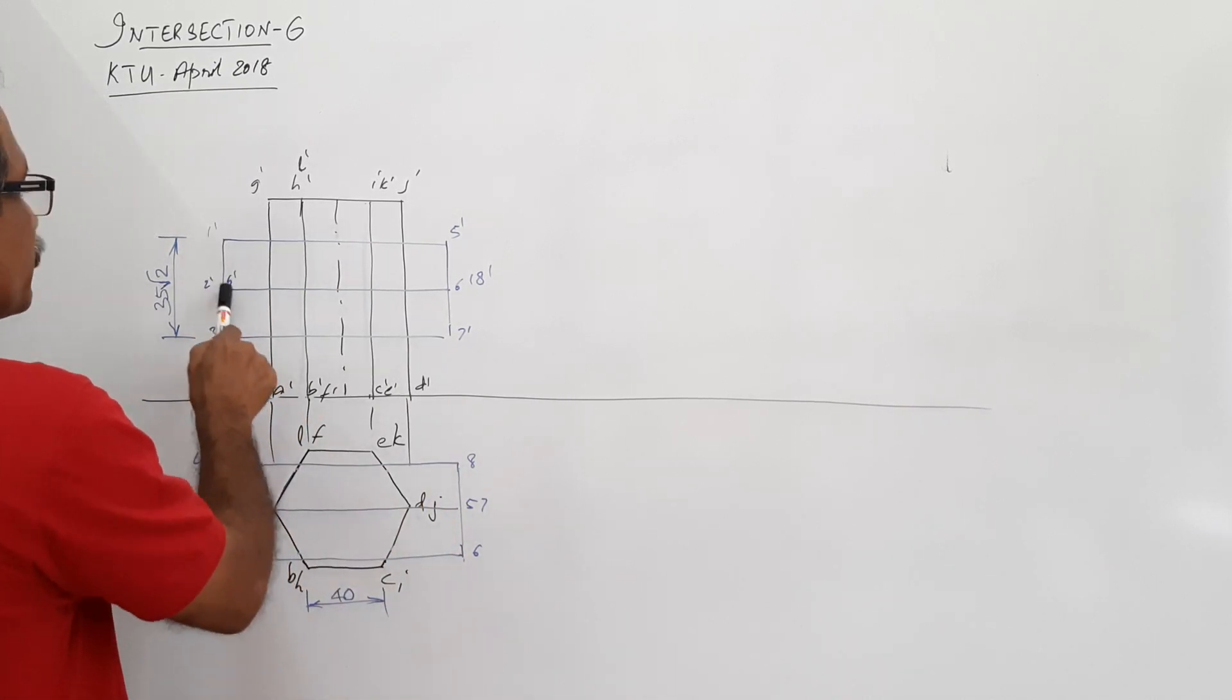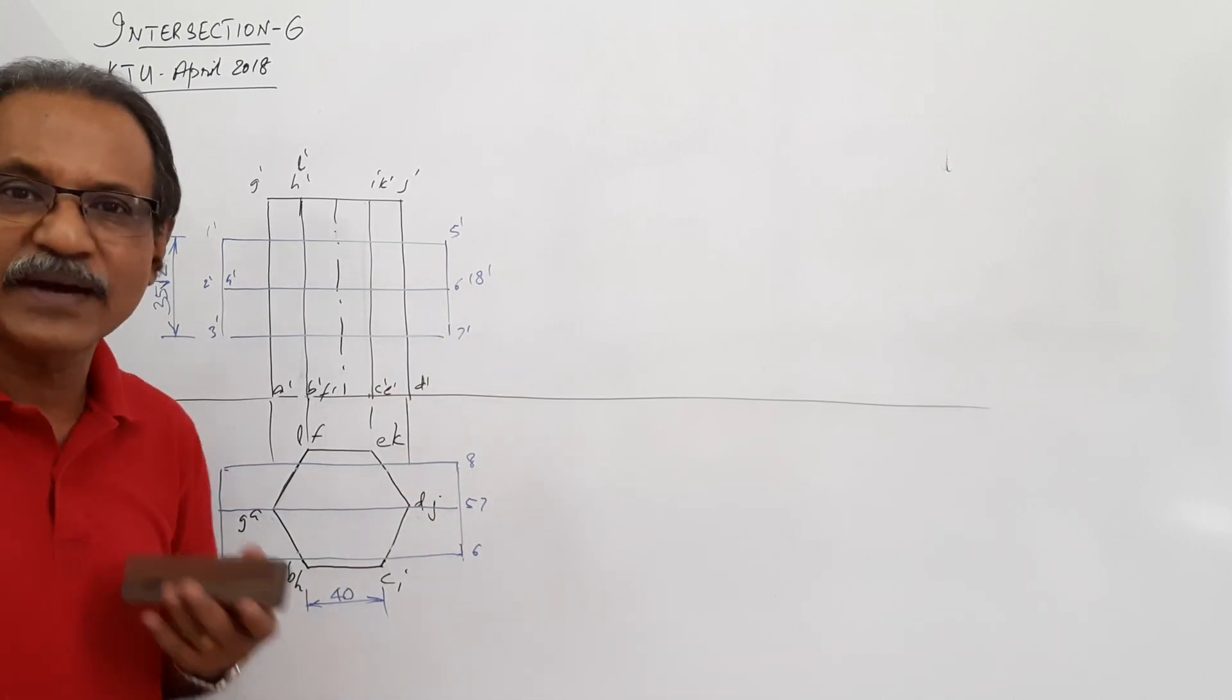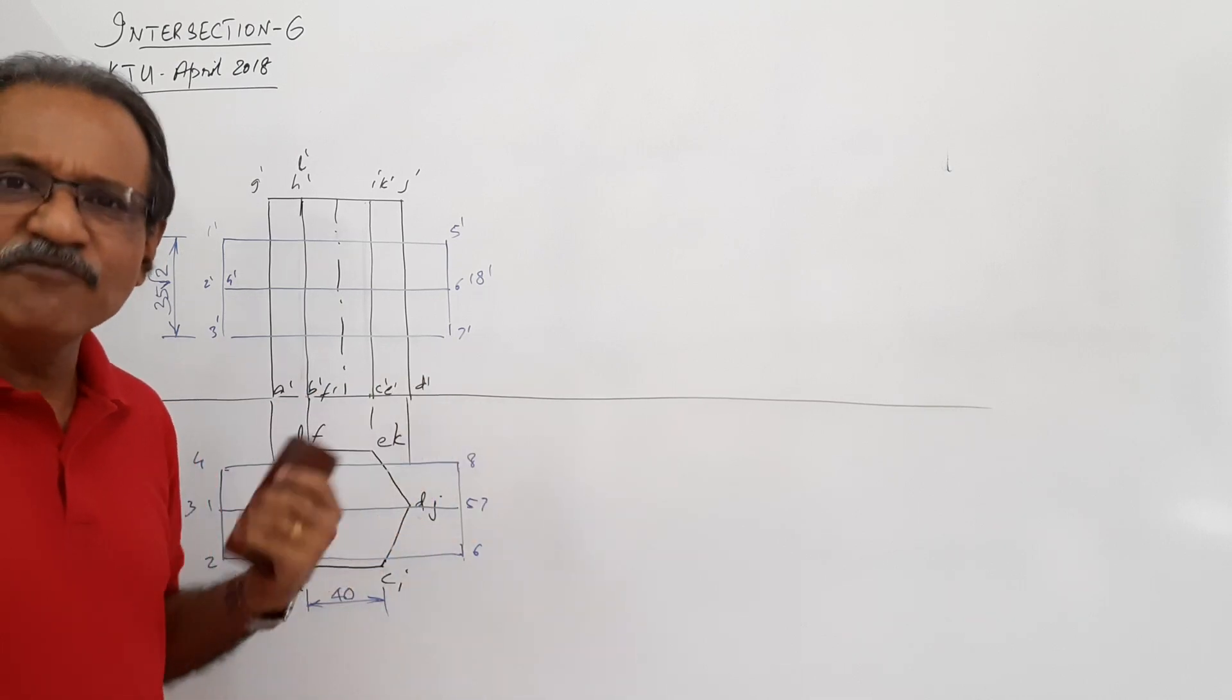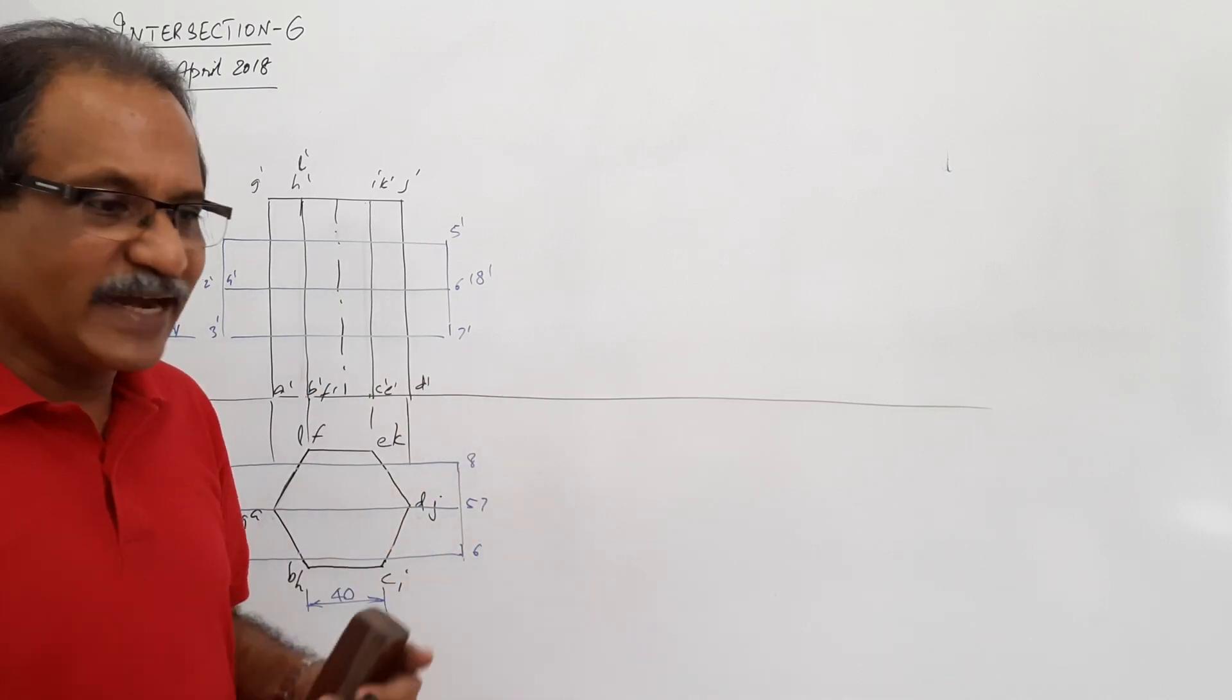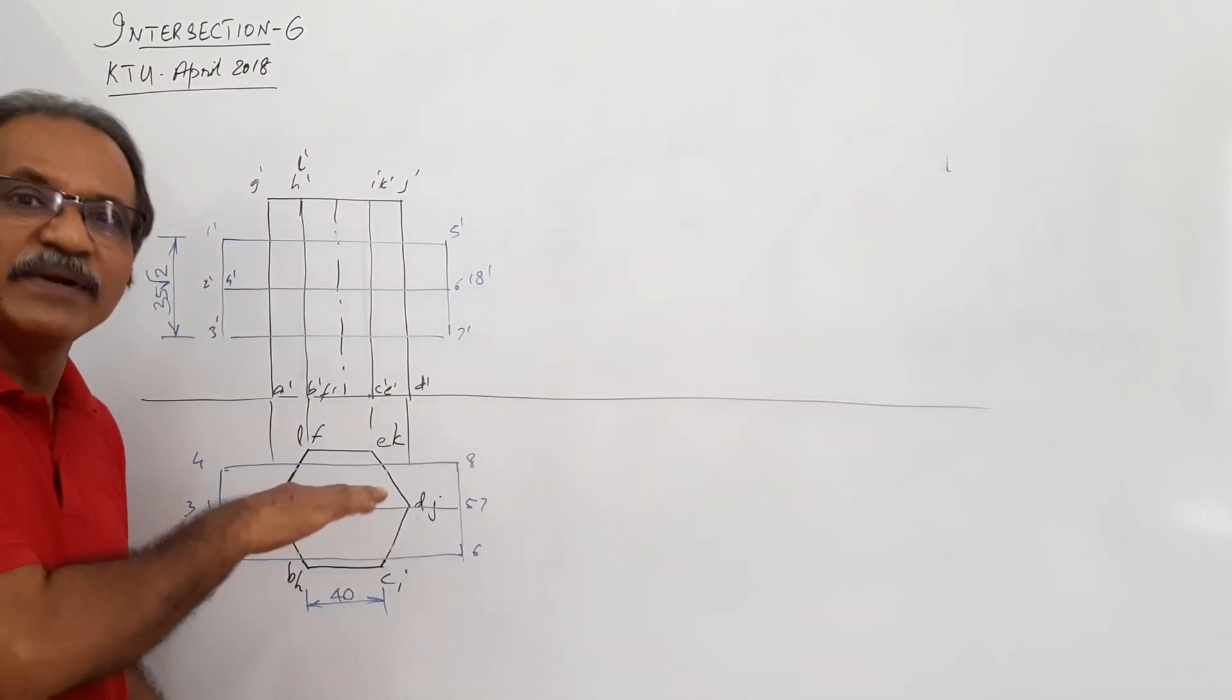And the plan also is 35 into root 2. 1, 2, 3, 4, 5, 6, 7, 8. 1 dash, 2 dash, 3 dash, 4 dash, 5 dash, 6 dash, 7 dash, 8 dash. Plan and elevation of the hexagonal prism intersected by the horizontal square prism.